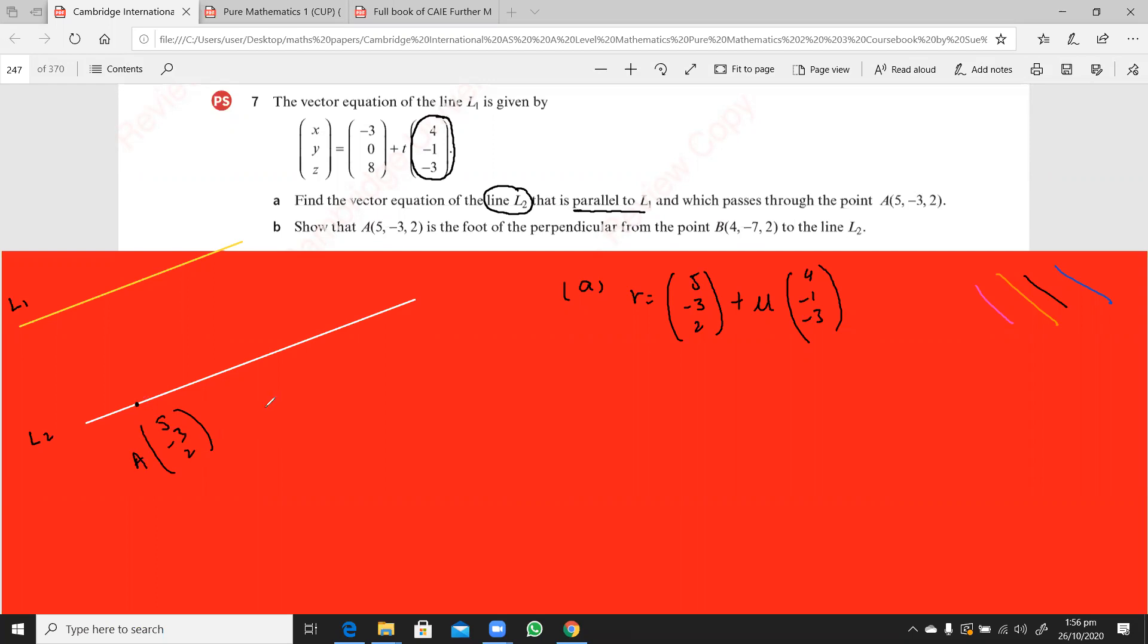Now let's say there is a point B, I'm taking it here, there is a point B over here, and this is a foot of the perpendicular from point B, now this point B is 4, minus 7, 2.